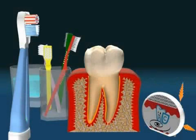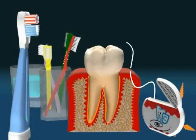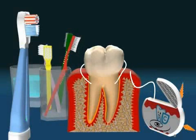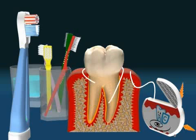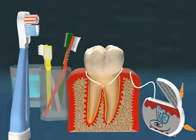Another cause of wedge-shaped defects can be the improper use of dental floss. If dental floss is laid around the tooth and moved back and forth, the dental floss cuts into the tooth after a while. Because of this, it's important to learn the correct cleaning technique in order to avoid damaging your teeth while flossing.